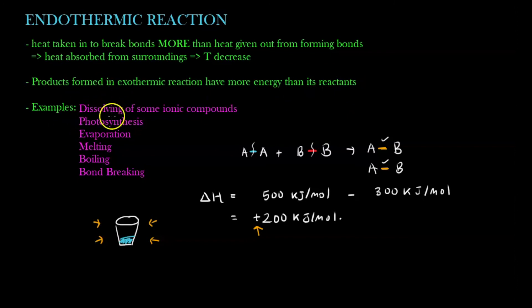Some examples are as follows. Dissolving some ionic compounds, especially those with NH₄⁺ ammonium in it. Usually they are endothermic. That means when you touch the cup, it is cold, instead of being room temperature. Photosynthesis as well. Evaporation, melting, boiling, bond breaking. So bond breaking, this one, the first part, it's endothermic. That means it takes in heat.